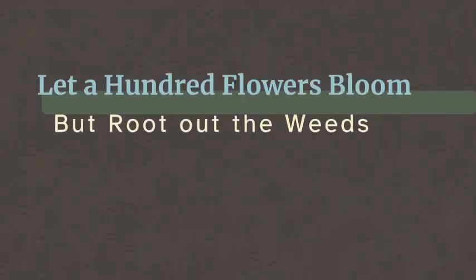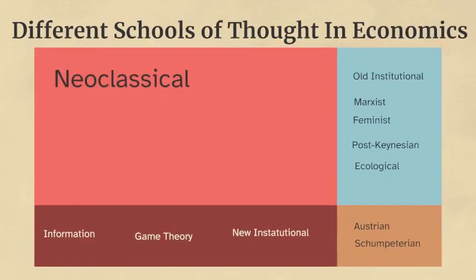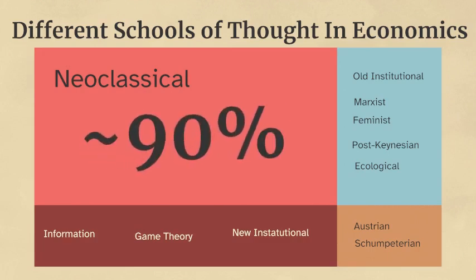"Let a hundred flowers bloom, but root out the weeds." Worrying Pluralisms in Economics. There is a wide collection of different schools of thought in economics, but some of them have much more prestige within the discipline and effects in policy. The largest school of thought is neoclassical economics — at least 90% of the ideas one's going to hear about in policy discussions is going to come from this perspective.